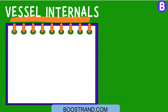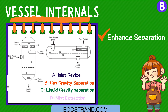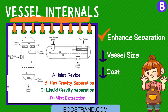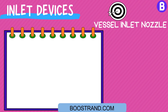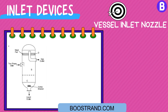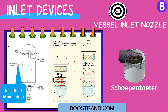Vessel internals are devices used at the vessel inlet or outlet or within the body of the vessel to enhance the separation. These internals can help reduce the vessel size significantly, which means reducing the final cost. Inlet devices are typically used on the vessel inlet nozzle to enhance separation by reducing the momentum of the entering fluid, causing liquid droplets to drop to the bottom of the vessel. There are several types of vessel inlet devices, such as deflectors and half-open pipe. There are also proprietary devices such as Shell Schoepentoeter, which are usually the most effective.